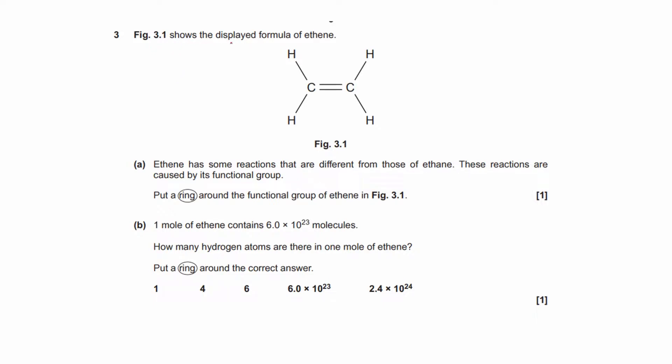Figure 3.1 shows the displayed formula of ethene. So this is ethene. The ending is ene, which means that it's an alkene. Ethene has some reactions that are different from those of ethane. This is an alkane.